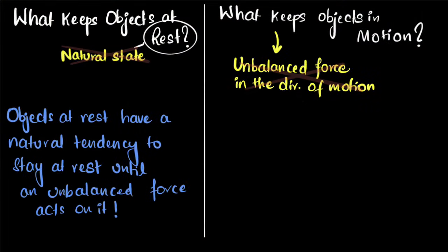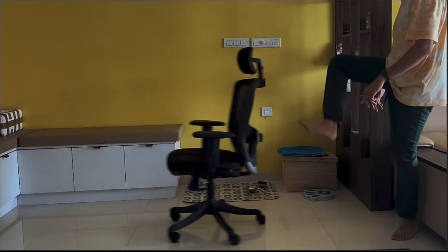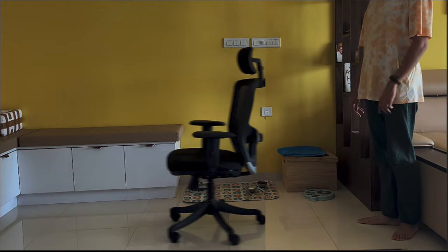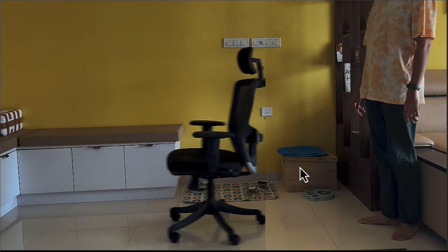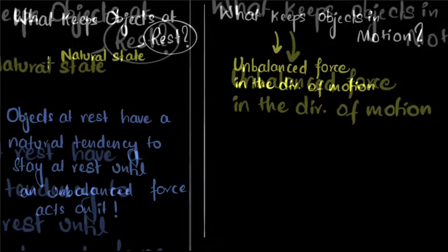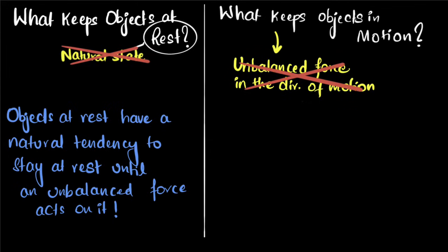For a moment, if we imagine that we needed an unbalanced force to keep things in motion, then that chair should have instantly stopped the moment we lost contact. This is how it would look — the chair would instantly stop once I let go of it. But clearly, this doesn't happen. This is not how things work, which means that idea is definitely wrong.